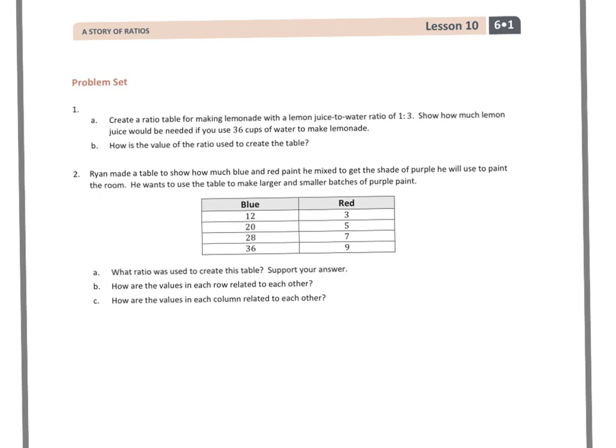For number 1 it says, create a ratio table for making lemonade with lemon juice to water ratio 1 to 3. So, lemon juice to water, 1 to 3. Show how much lemon juice would be needed if you used 36 cups of water to make lemonade.